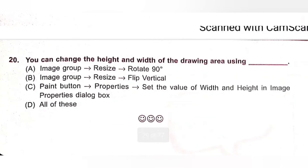Question 20: You can change the height and width of the drawing area using — A. Image group, Resize, Rotate 90 degrees. B. Image group, Resize, Flip Vertical. C. Paint button, Properties, set the value of height and width in the Image Properties dialog box. D. All of these. The correct method is Paint button, Properties, set the value of height and width in the Image Properties dialog box. Option C is the correct answer.